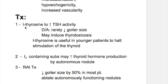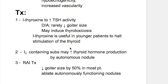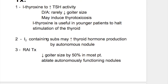There are several treatments. First, L-thyroxine is used to decrease TSH activity, but the disadvantage is that it rarely decreases goiter size and may induce thyrotoxicosis. L-thyroxine is useful in younger patients to halt thyroid stimulation, but in older patients it may cause thyrotoxicosis.